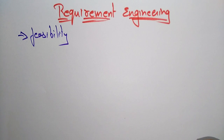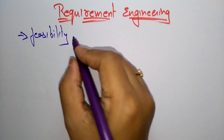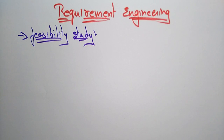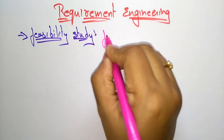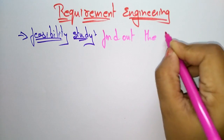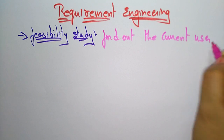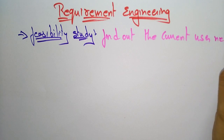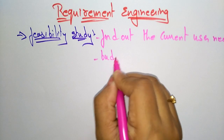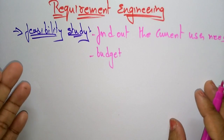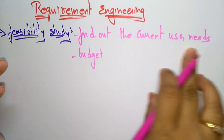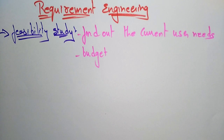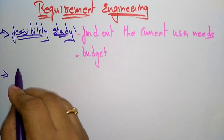First, you have to think about the feasibility study. The feasibility study is to find out the current user needs and budget. In the feasibility study, the requirement engineer is going to study and find out what exactly the current user needs and what is the budget going to be given to that project.